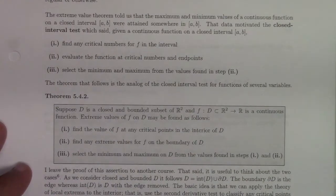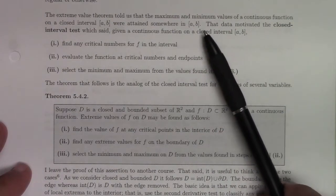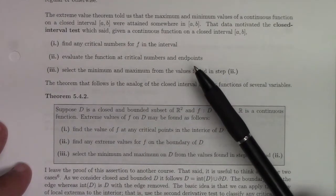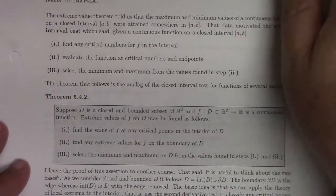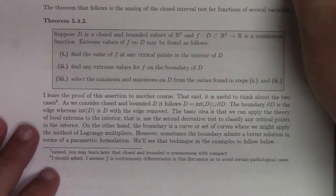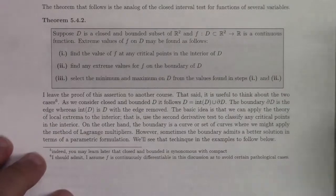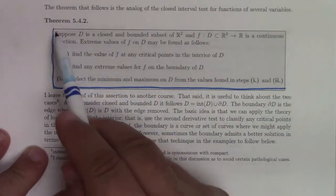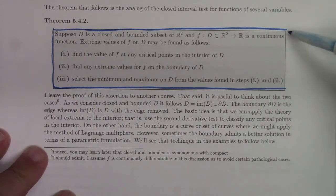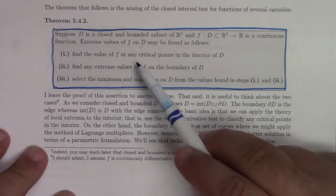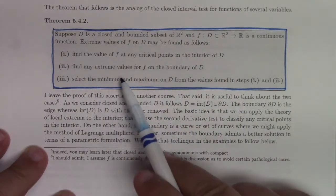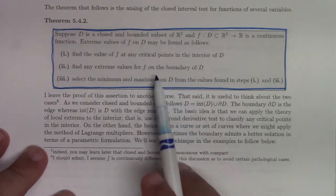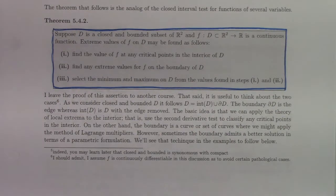The extreme value theorem told us that the max and mins of a continuous function in a closed interval are attained somewhere in AB. This motivates the same idea for a function of two variables. If D is a closed and bounded subset of R2, we're going to find extreme values by first finding any critical points in the interior of D, then finding any extreme values for F on the boundary of D, and then picking winners and losers comparing the values at the critical points in the interior and the extreme values on the edge.